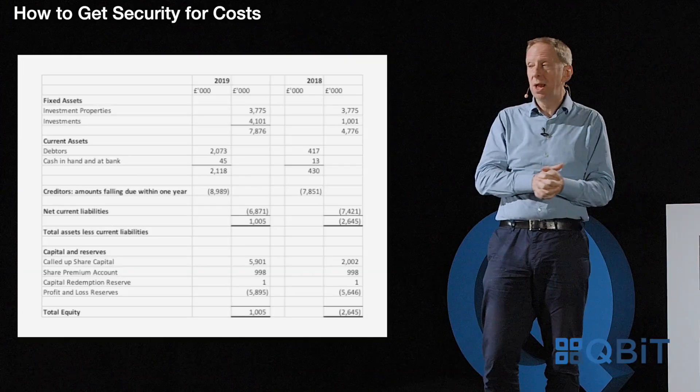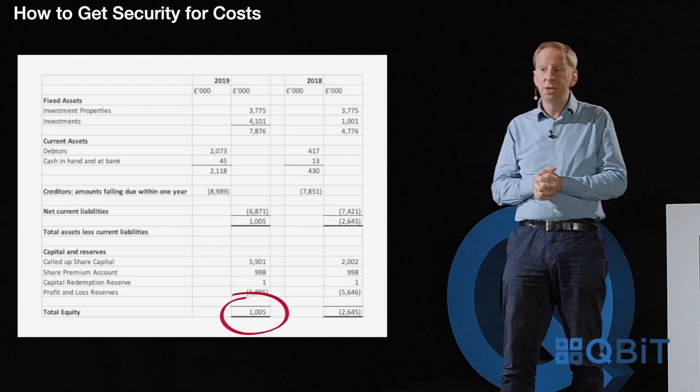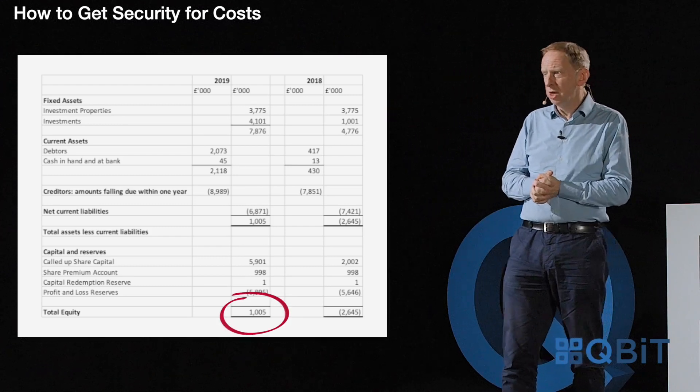Sometimes in a balance sheet you will see all of the assets on one side and all of the liabilities on another, so it's less easy to work out what the net assets are. A quick tip: just look for the profit and loss account and the share capital and add those together. The capital and reserves comes through as exactly the same figure as the net assets, as you can see at the bottom of this balance sheet.